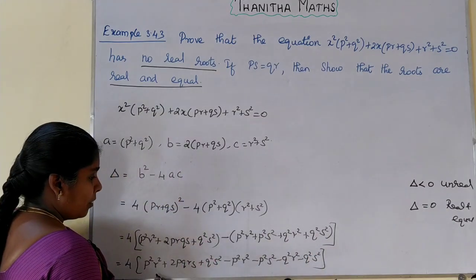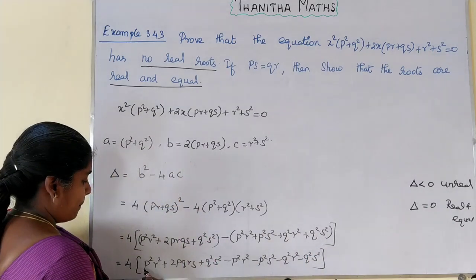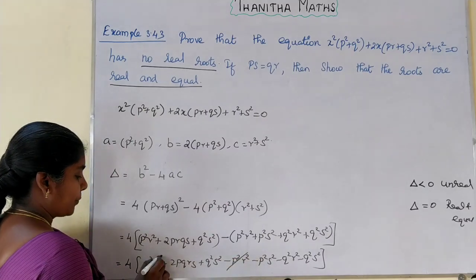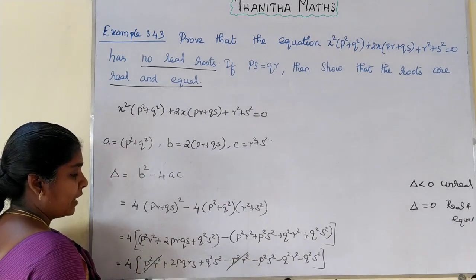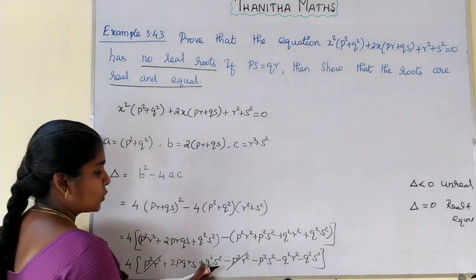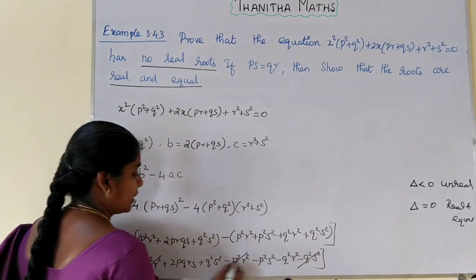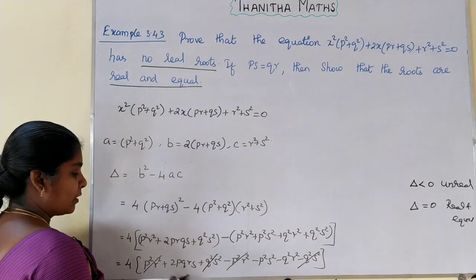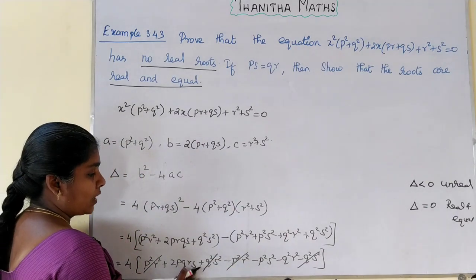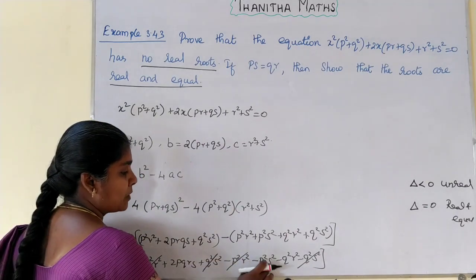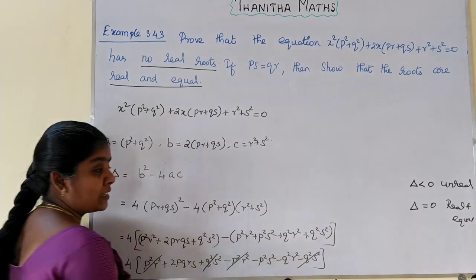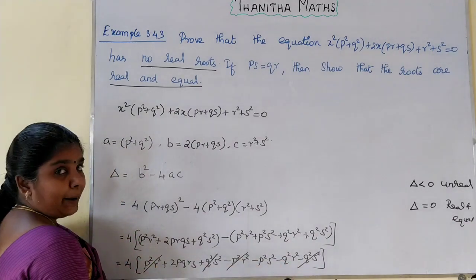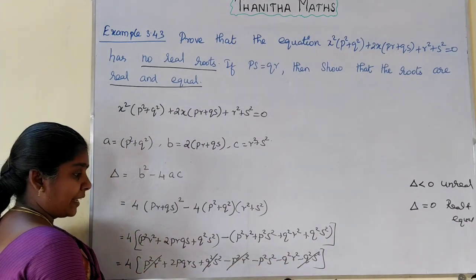Now we cancel terms. p²r² minus p²r² cancels. q²s² minus q²s² cancels. We are left with: -4p²s² + 8pqrs - 4q²r², which simplifies to minus 4 into (p²s² - 2pqrs + q²r²).